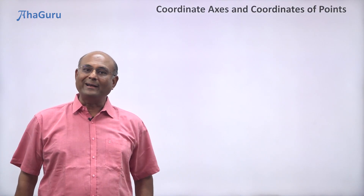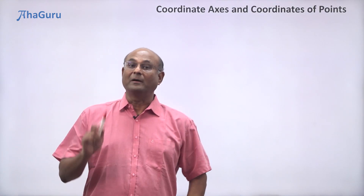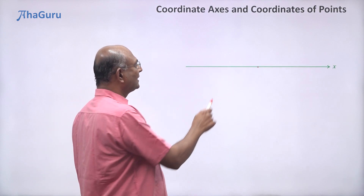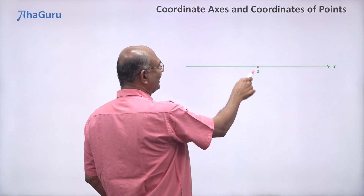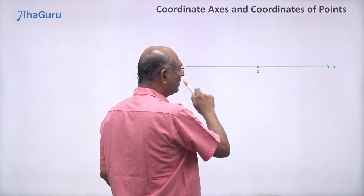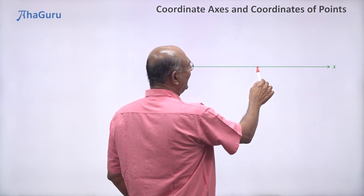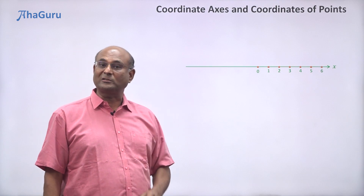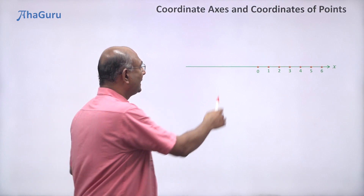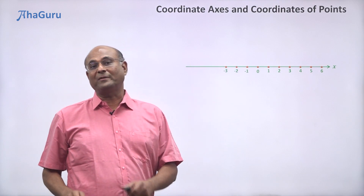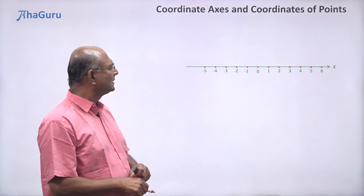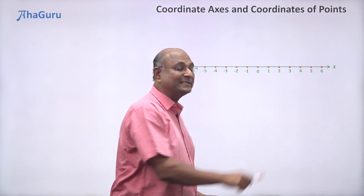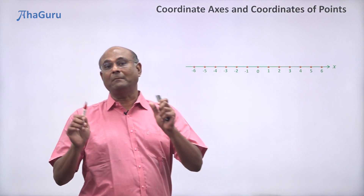Let us learn about the coordinate axis system. First, I am going to draw a horizontal line and call it the x-axis. This point I am going to choose as 0, and we will mark off equal intervals to the right as positive numbers, and equal intervals to the left as negative numbers. Does this remind you of something? A number line — the x-axis is simply a number line.